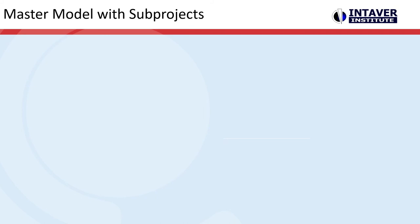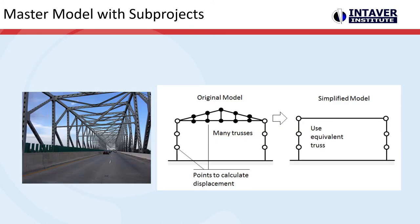Master model with subprojects: master and subprojects allows teams to run simulations on smaller, easier to maintain subprojects. The mathematical foundation for this is called static condensation, and this process analyzes smaller structures of larger objects first. As a result, by using the results of the subproject, we can use much smaller models for the analysis of a project.